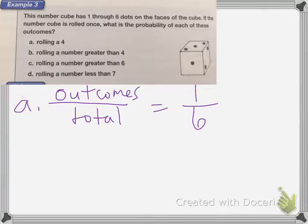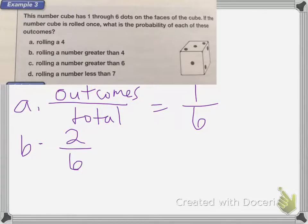For rolling a number greater than four, how many numbers are greater than four? It's five and six. So there are two numbers greater than four out of a total of six numbers possible. That is equal to two-sixths, which we reduce to one-third.